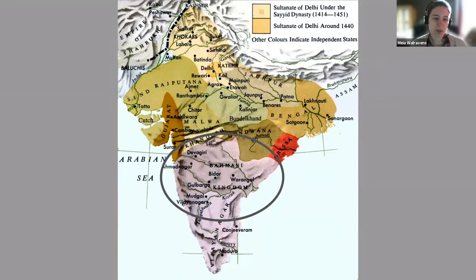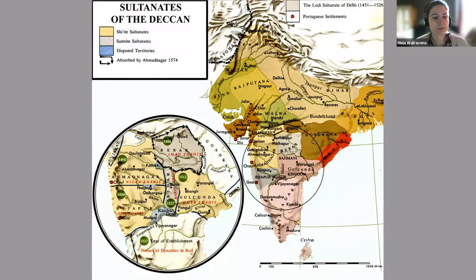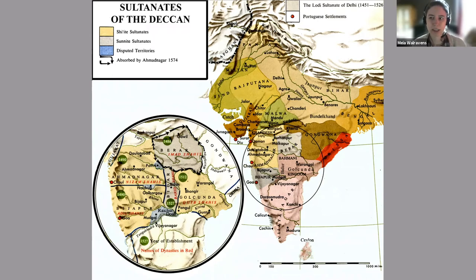To its south lay the Hindu kingdom of Vijayanagara. On both sides, the Bahmani frequently had to fight to settle territorial disputes. It was not because of external threats, however, that the Bahmani Sultanate eventually ceased to exist in the 16th century, but because of internal uprisings that led to it falling apart from the 1480s onwards. It fell apart into five new sultanates, known today as the Deccan Sultanates, and by approximately 1527 the Bahmani Sultanate did not exist anymore.